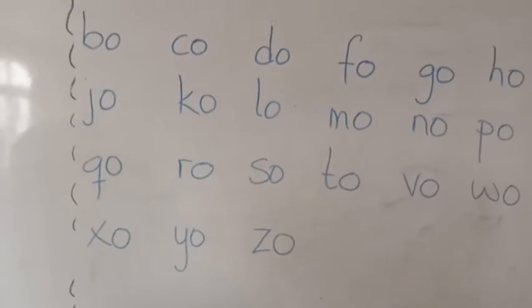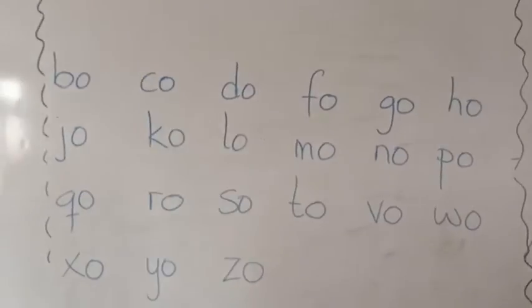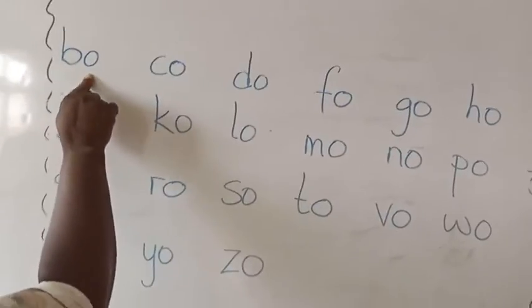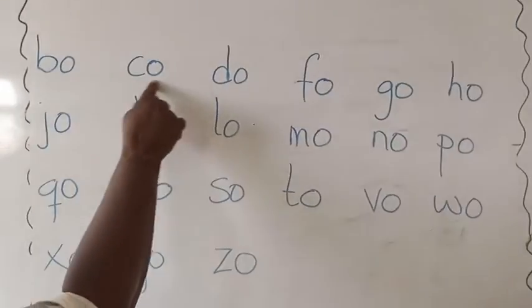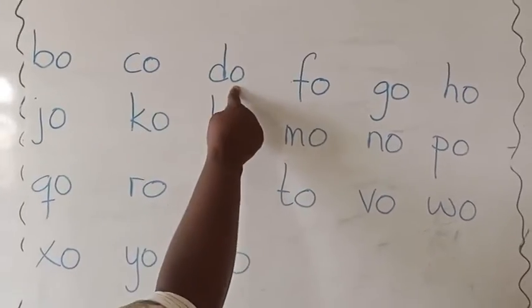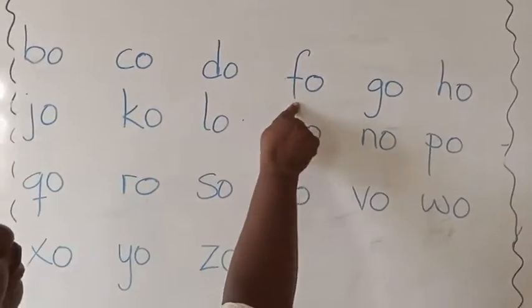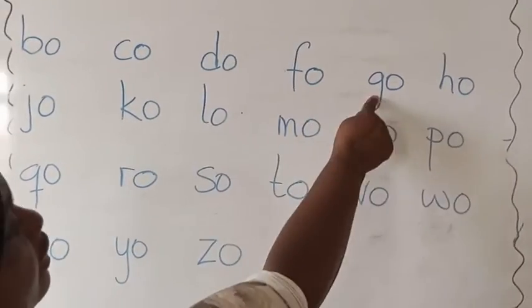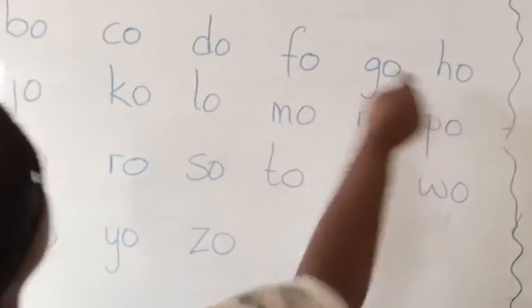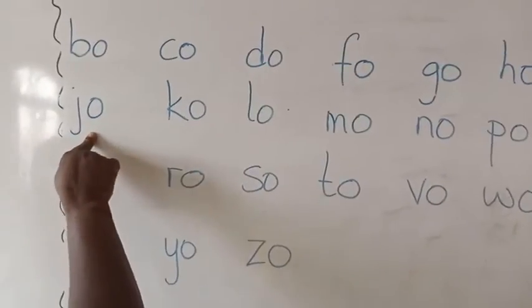I hope you heard me. I'm going over it again. Ba, a, ba. Ko, a, ka. Do, a, da. F, a, fa. Go, a, ga. Ho, a, ha. Jo, a, ja.